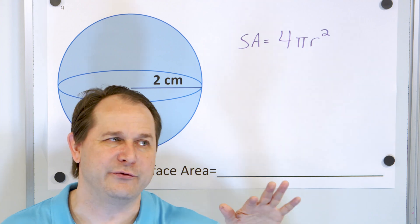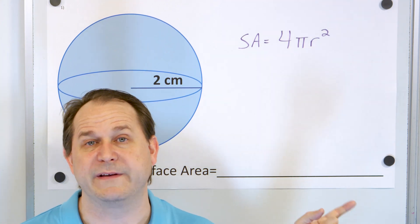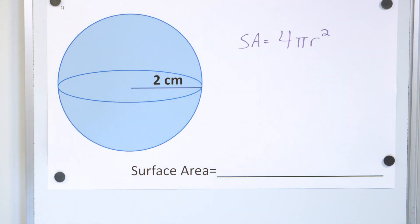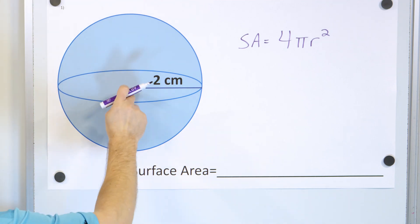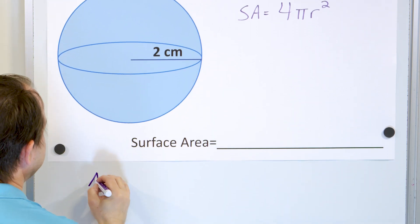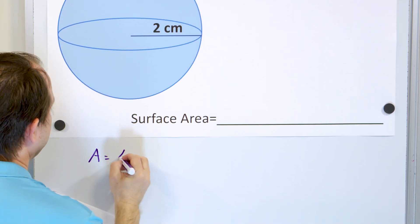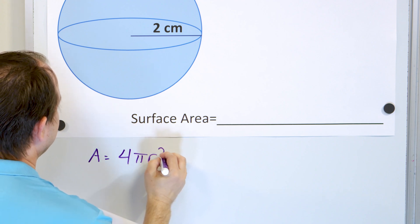When you get into further classes down the road, we will prove this to be true. But for now, we want to use this fact to find the surface area of a sphere that has a radius from the center to the edge of two centimeters. So the area is always four times pi times r squared.